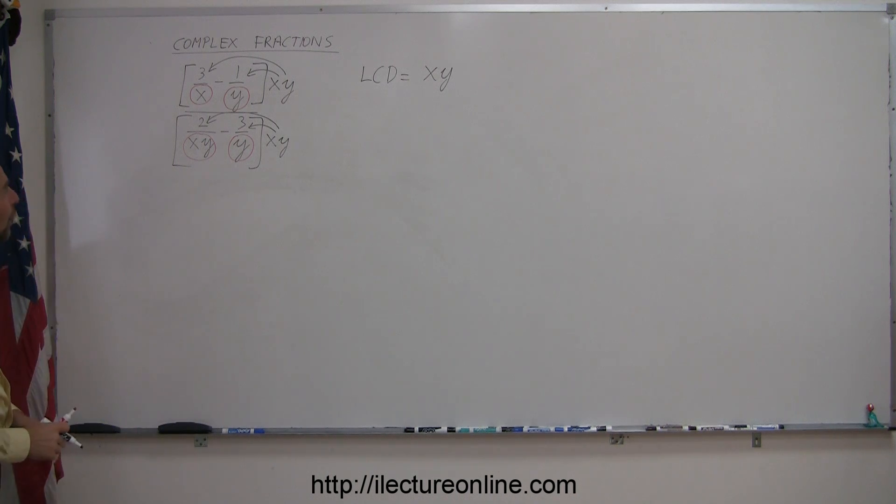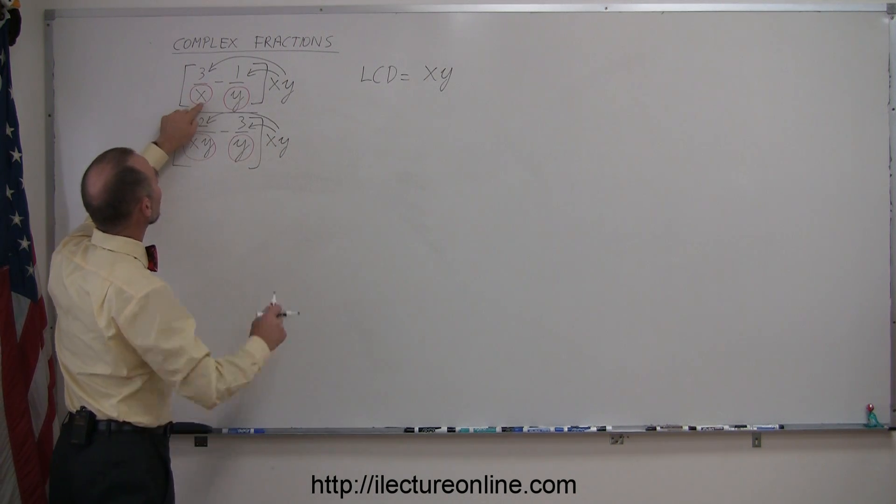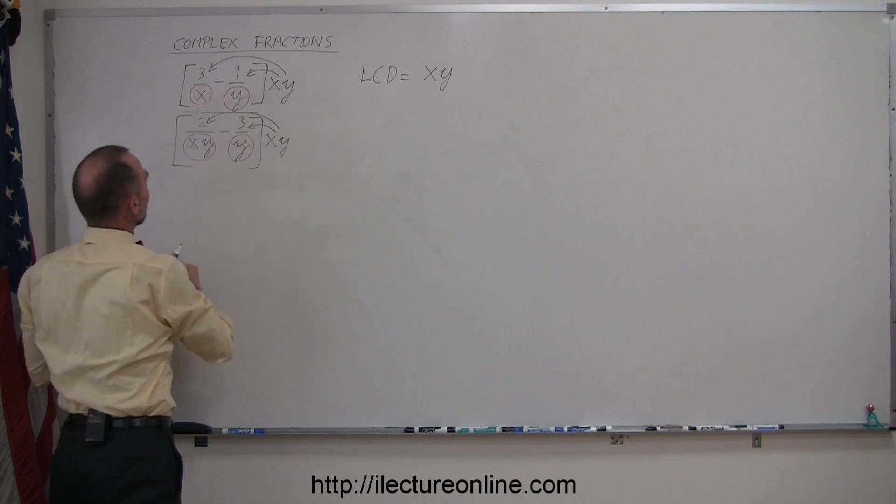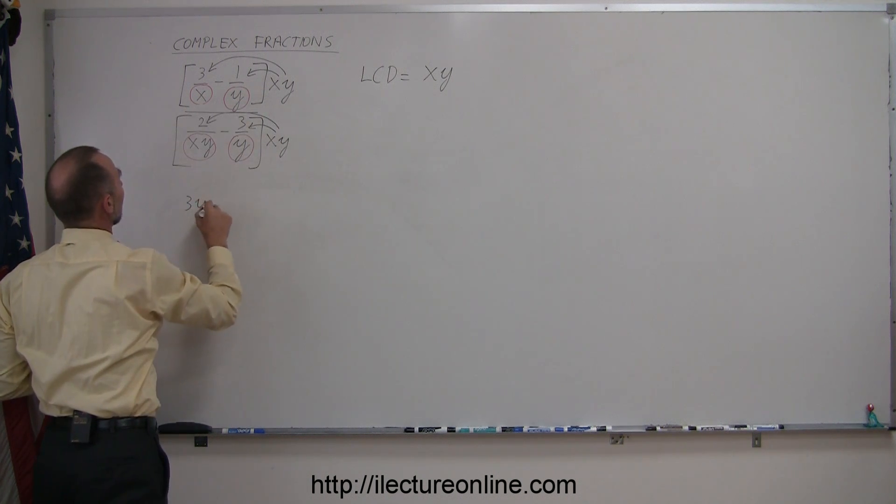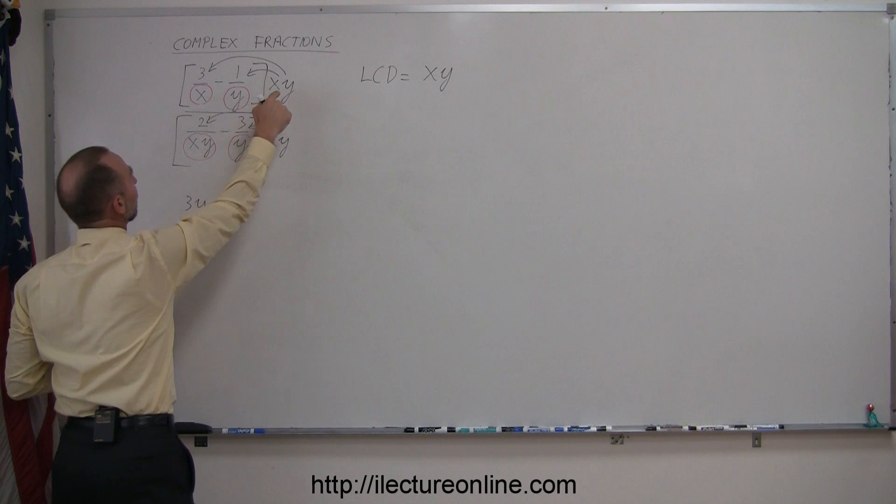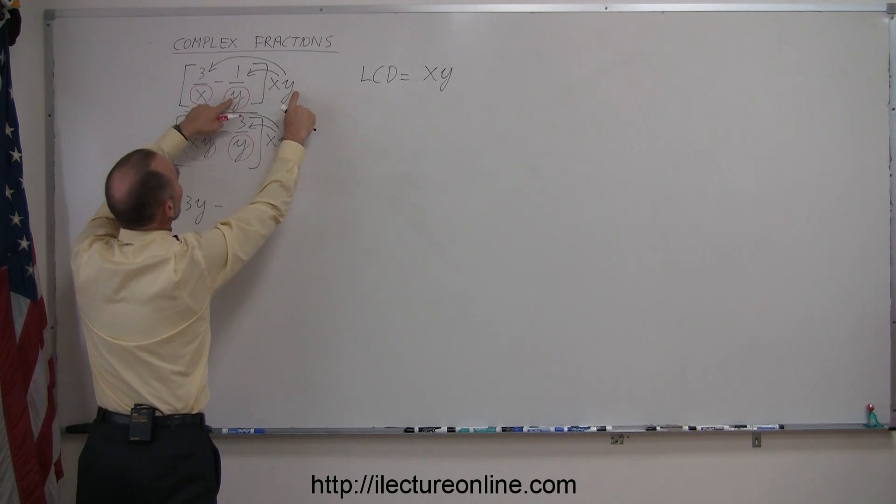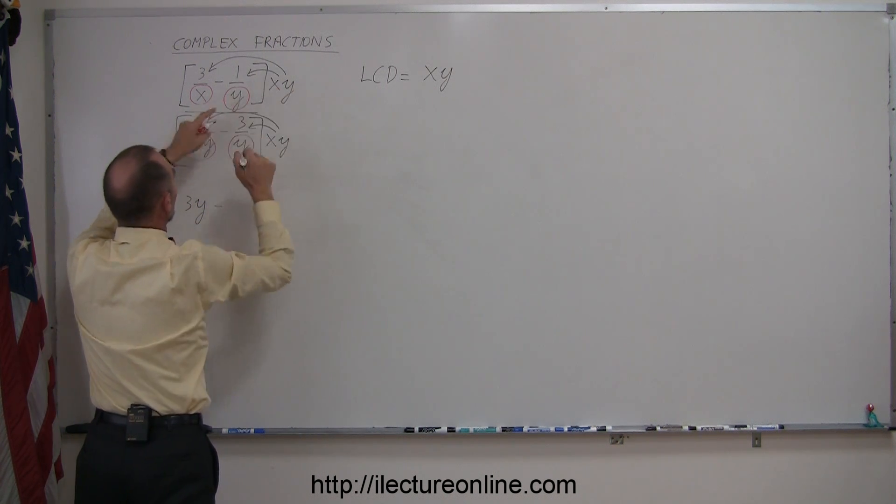All right, when I multiply x times y times 3 over x, the x's will cancel out, and I'm left with 3y. Minus, when I multiply this times this times this, the y's will cancel out, and I'm left with 1 times x, or x.